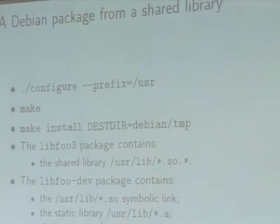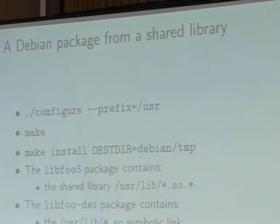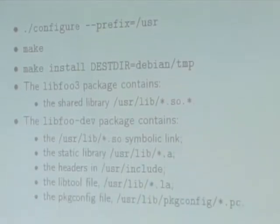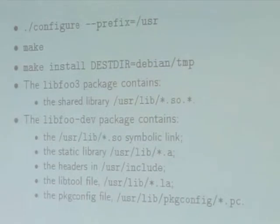If you want to package a shared library for Debian, what you could think is you just run configure, make, make install, and build for your libfoo library: a libfoo3 package containing a shared library at version 3, and the libfoo-dev package containing what's needed for development — the symbolic link for the shared version, the static library, the headers, and development tools like libtool or pkg-config. And that's all — you've got a package.